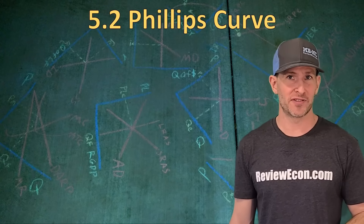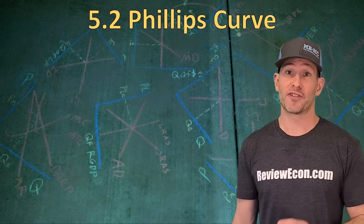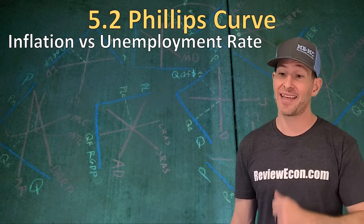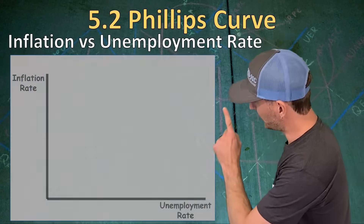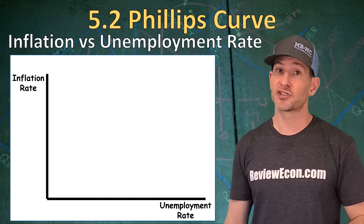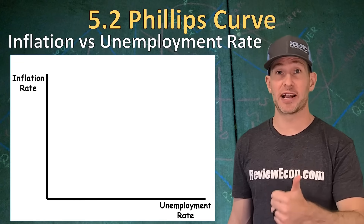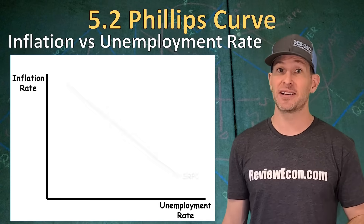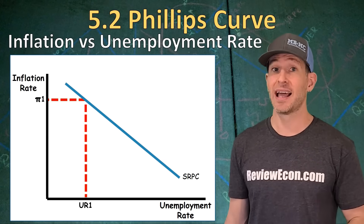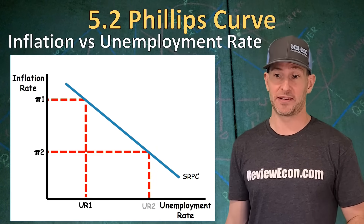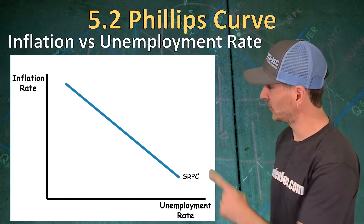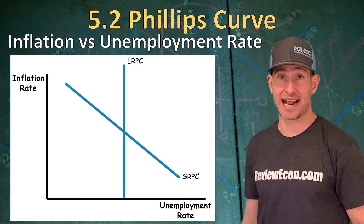The last thing we're going to talk about is a new graph called the Phillips curve. The Phillips curve shows us the relationship between the inflation rate and the unemployment rate. On the y-axis we have the inflation rate; on the x-axis we have the unemployment rate. In the short run, we have an inverse relationship between the inflation rate and the unemployment rate, illustrated with a downward-sloping short-run Phillips curve — at high inflation rates we have low unemployment, and at low inflation rates we have high unemployment. In the long run, that relationship tends to break down, and we have a long-run Phillips curve that is vertical at the natural rate of unemployment.